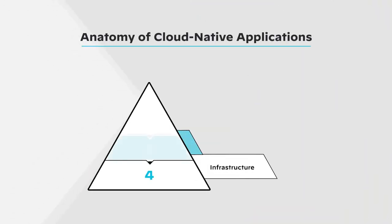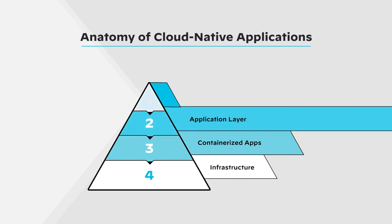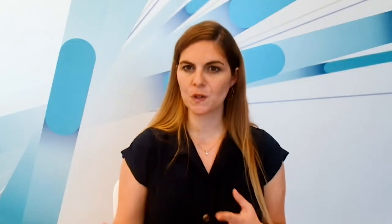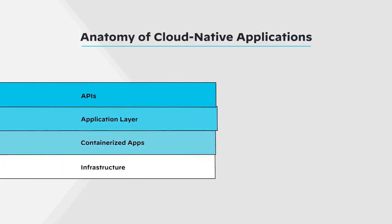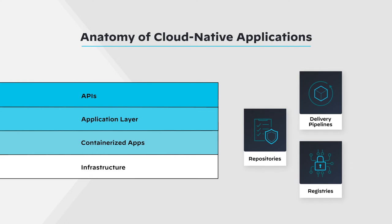On top of everything, you have your APIs. Web application and API security are used to protect traffic to and from the application. Finally, in order to store, manage, deliver, and test those software components, you need network and repository delivery pipelines and registries. Supply chain security — specifically VCS and CI/CD security tools — helps follow and enforce best practices for your repositories and pipelines.